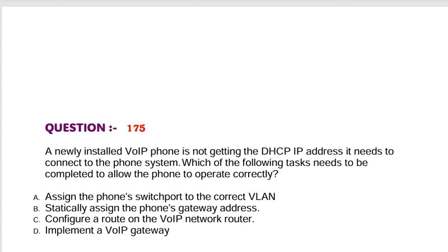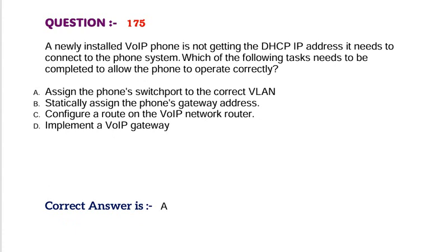Question: A newly installed VoIP phone is not getting the DHCP IP address it needs to connect to the phone system. Which of the following tasks need to be completed to allow the phone to operate correctly? Option A, assign the phone's switch port to the correct VLAN. Option B, statically assign the phone's gateway address. Option C, configure a route on the VoIP network router. Option D, implement a VoIP gateway. Correct answer is Option A.